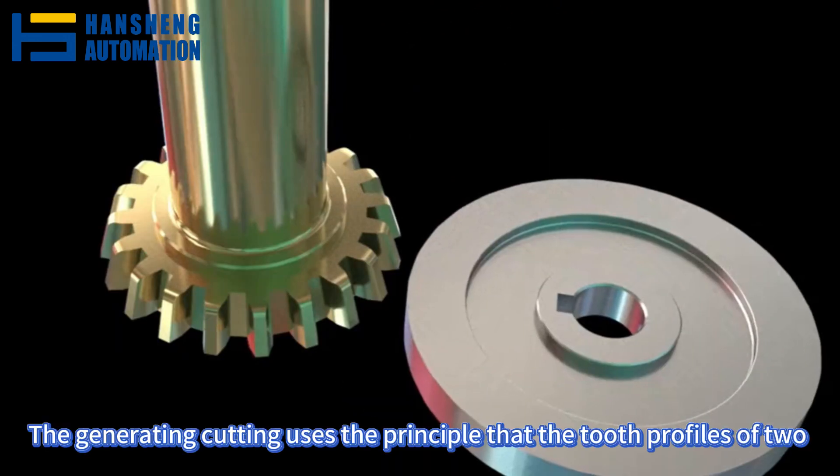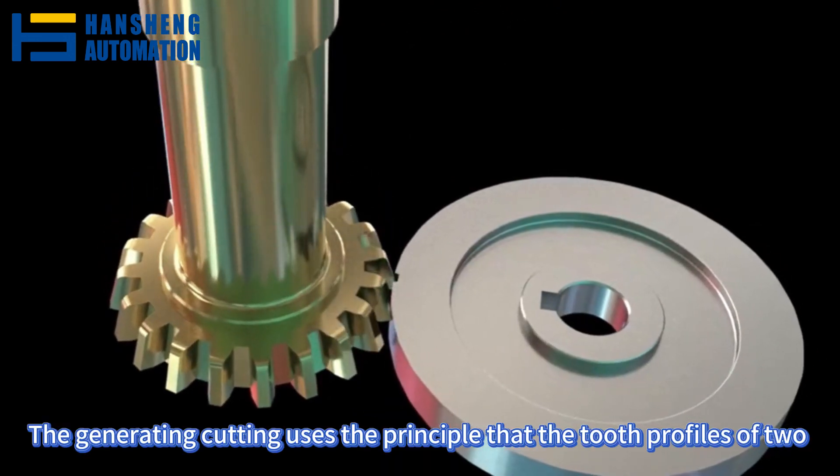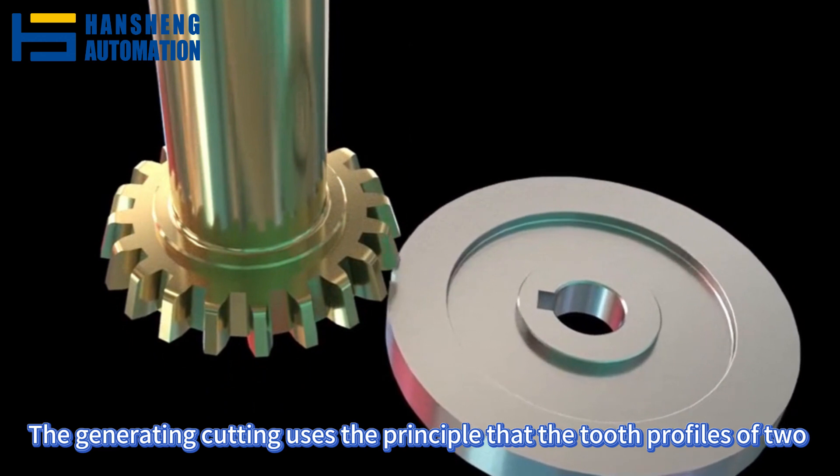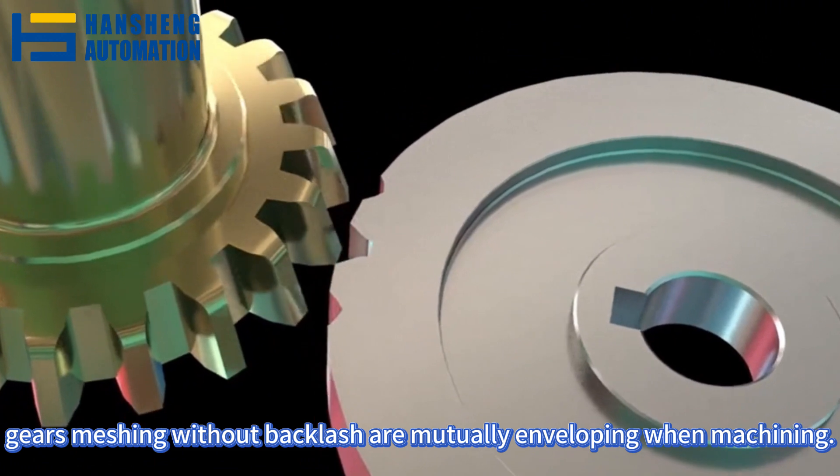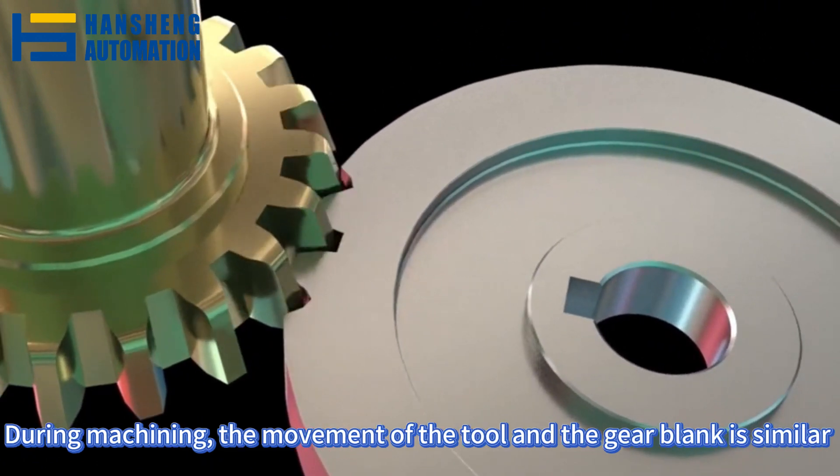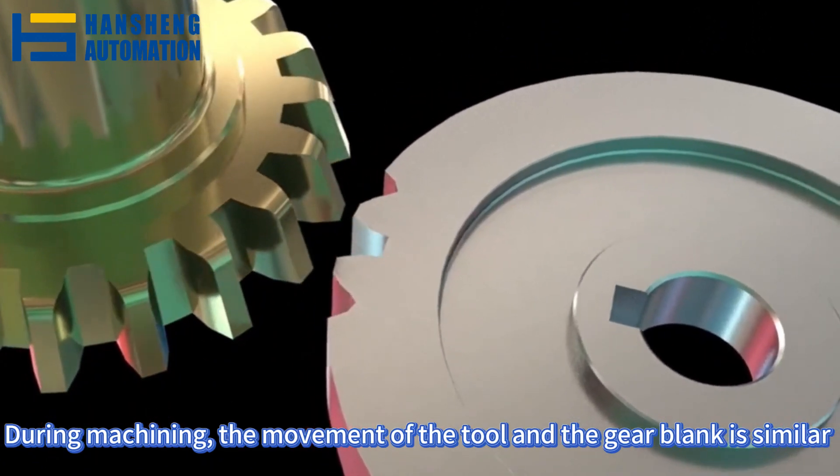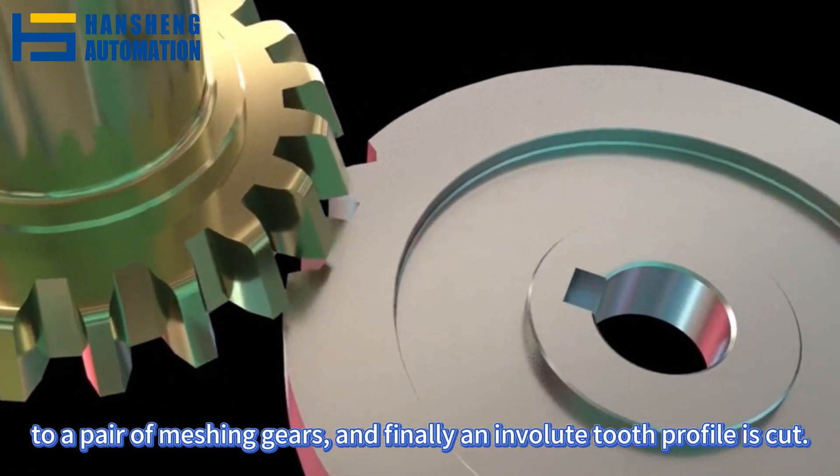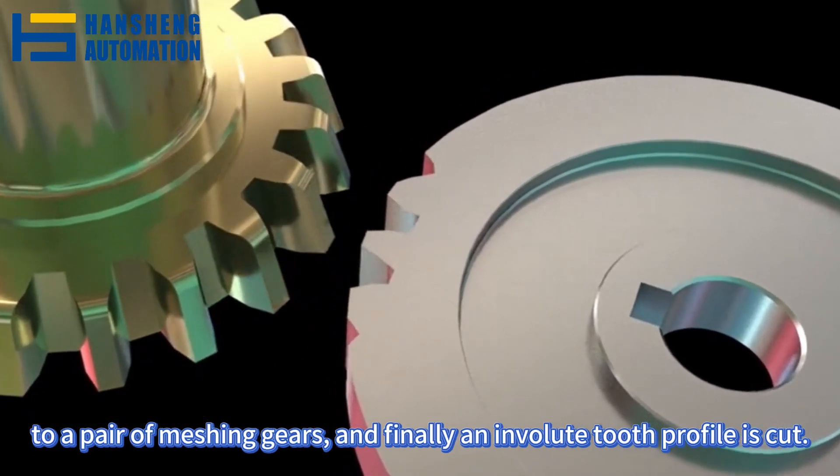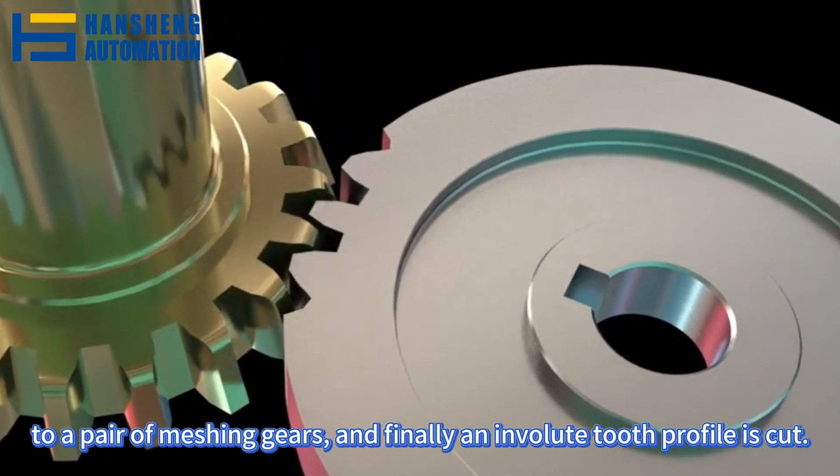The generating cutting uses the principle that the tooth profiles of two gears meshing without backlash are mutually enveloping when machining gears. During machining, the movement of the tool and the gear blank is similar to a pair of meshing gears, and finally an involute tooth profile is cut.